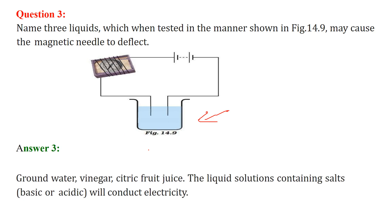We can have groundwater, vinegar, or fruit juice. Why? Because all these liquid solutions contain salts that are basic or acidic that will conduct electricity.